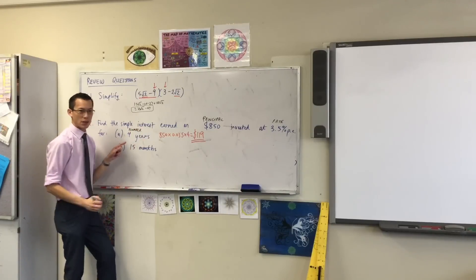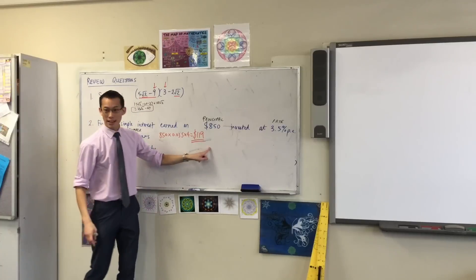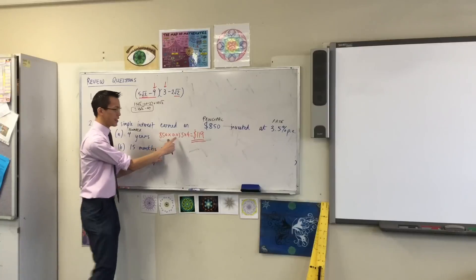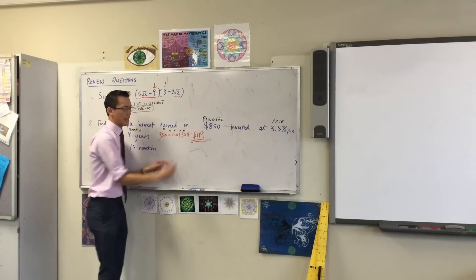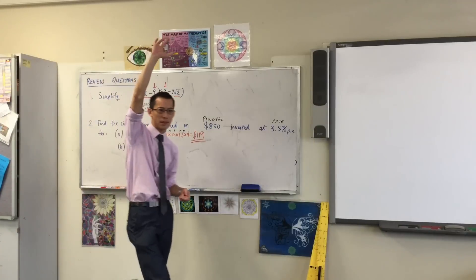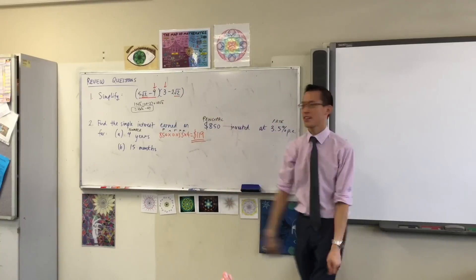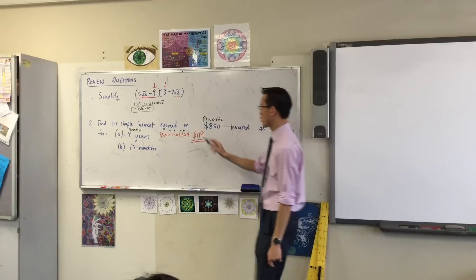This 4 years - what would you describe that as? A number, yeah. So we tend to write that as number of time periods because there are sometimes different ones. So now you can see this line here: 850, 0.035, and 4. That's P times R times N. Do you agree? $119. Heads up if you've got that.